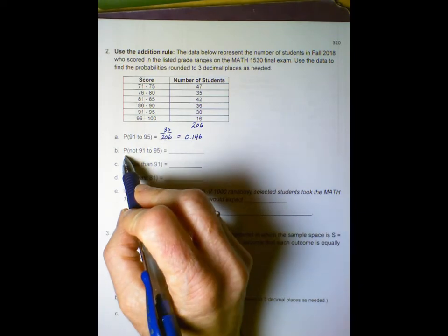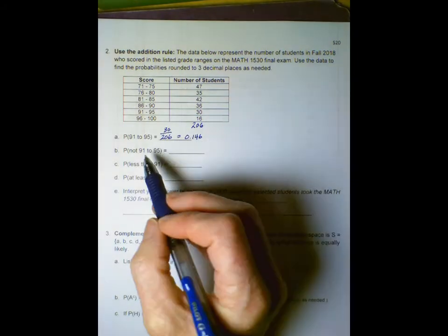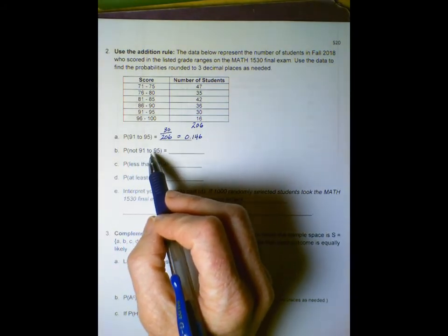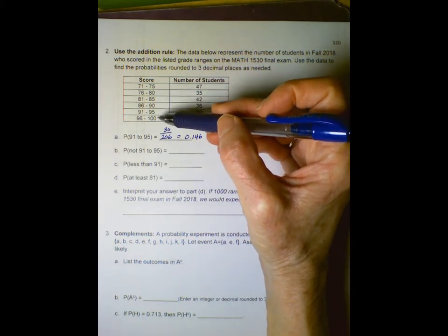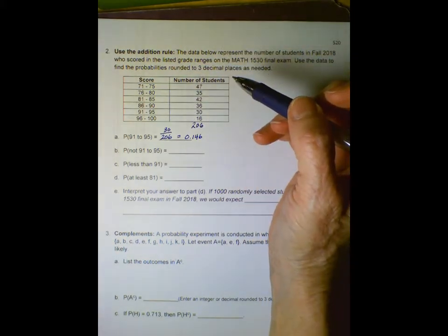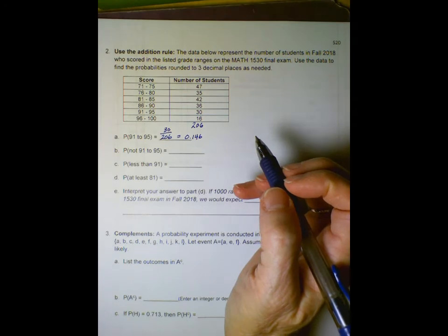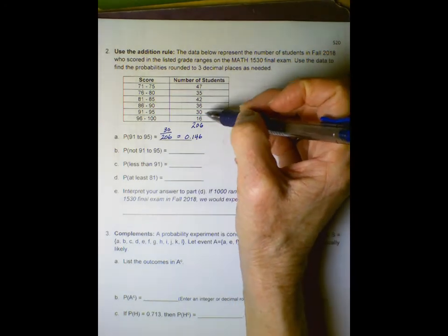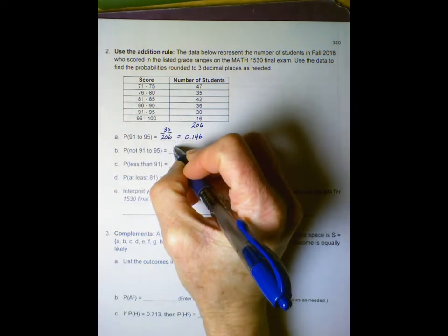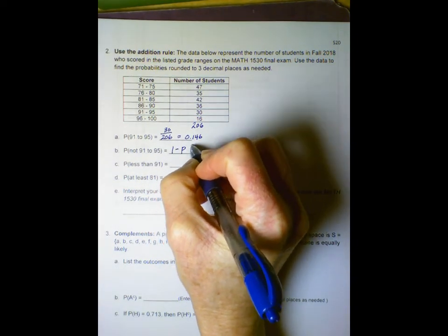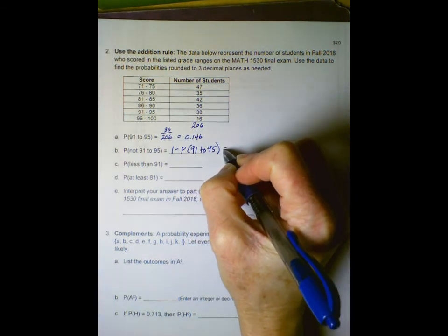Part b says find the probability that a student in this group of 206 students did not score between 91 and 95. There are five categories where that's the case, but if we recall complements, we can solve this problem much easier than adding up those five. The probability of not 91 to 95 equals one minus the probability that it is 91 to 95, and we just found that was 0.146.